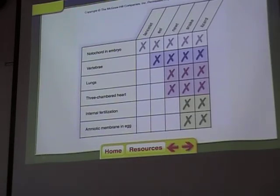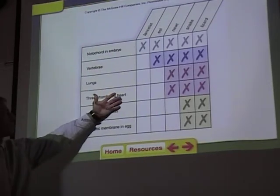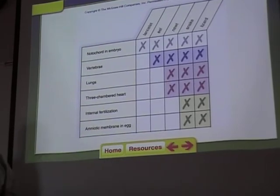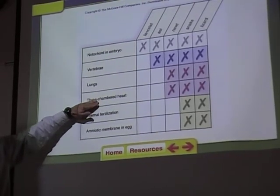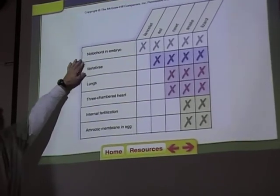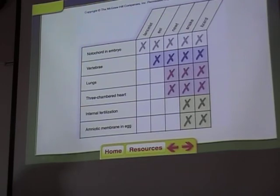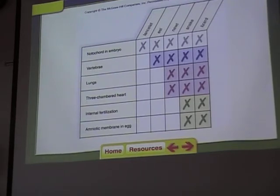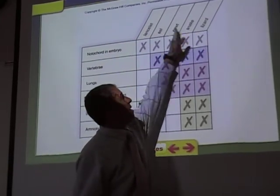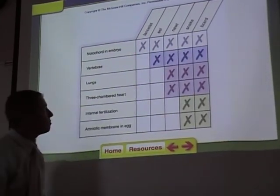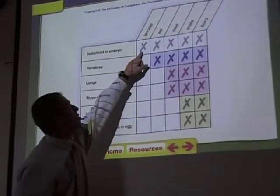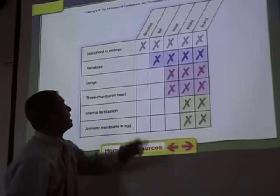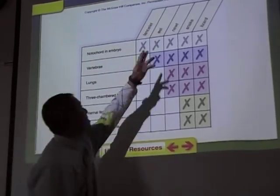You're going to make one, so pay attention. You take a number of organisms and chart which characters they have. The lancelet only has the notochord and the embryo. The eel has the notochord and vertebrae. The lizard has all of those things. We're going to use this information to make an evolutionary tree.